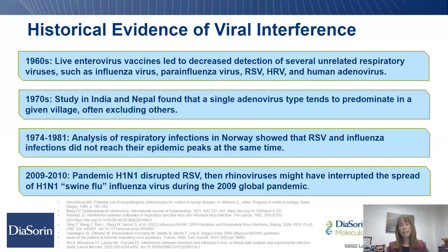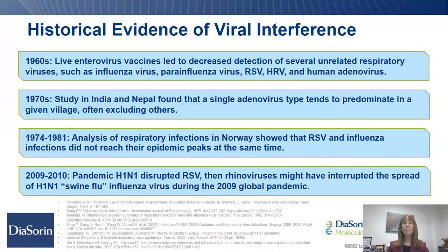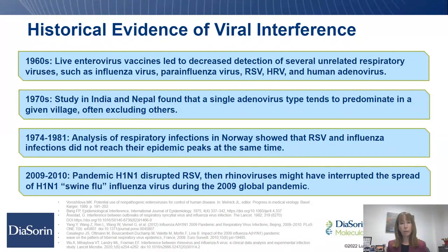A study performed in Norway between 1974 and 1981 analyzed respiratory infections and showed that RSV and influenza infections did not reach their epidemic peaks at the same time — a pattern of different viruses peaking at different times. Then in 2009-2010, we had pandemic H1N1 circulating the globe, and RSV basically dropped down to almost zero when pandemic H1N1 took over. There's also a theory and evidence that rhinoviruses might have interrupted the spread of that H1N1 flu virus during that pandemic — rhinovirus specifically caused a disruption of flu.